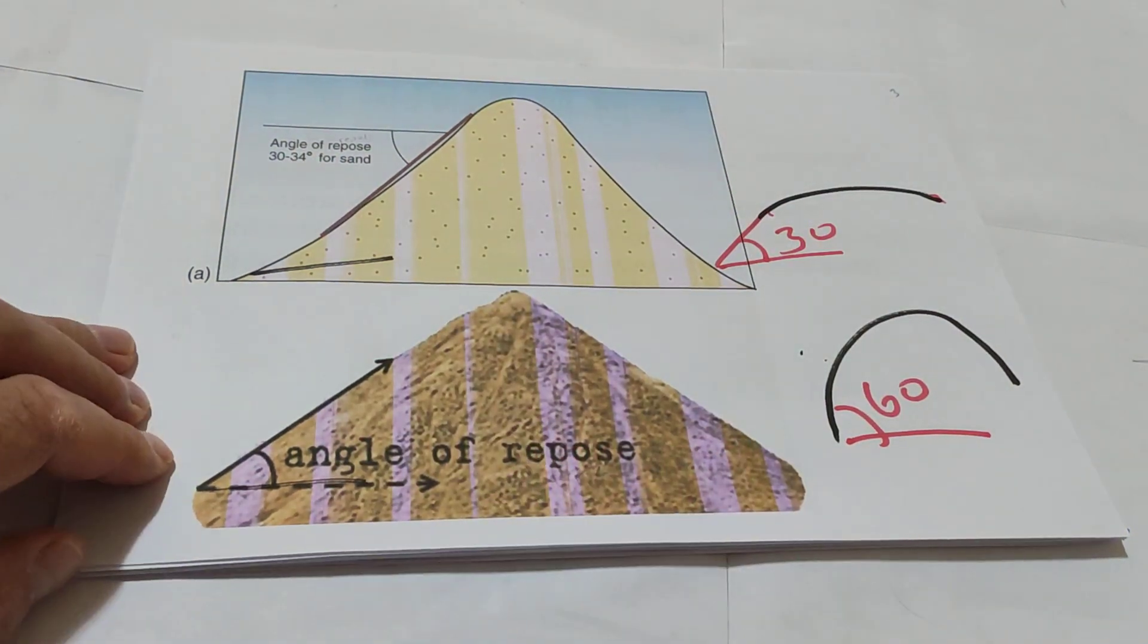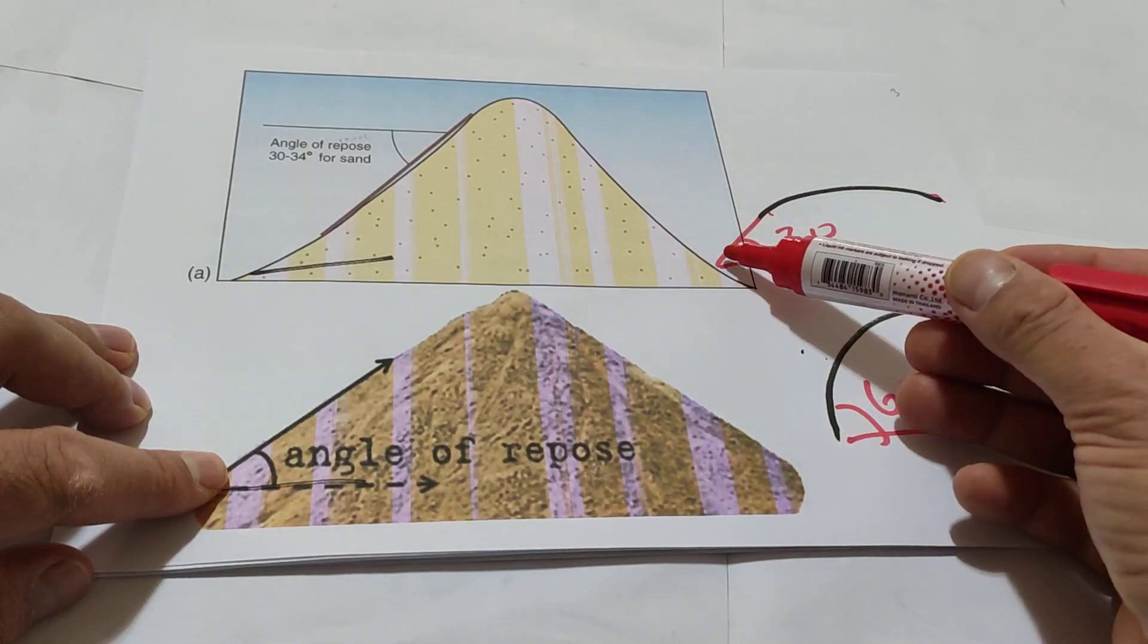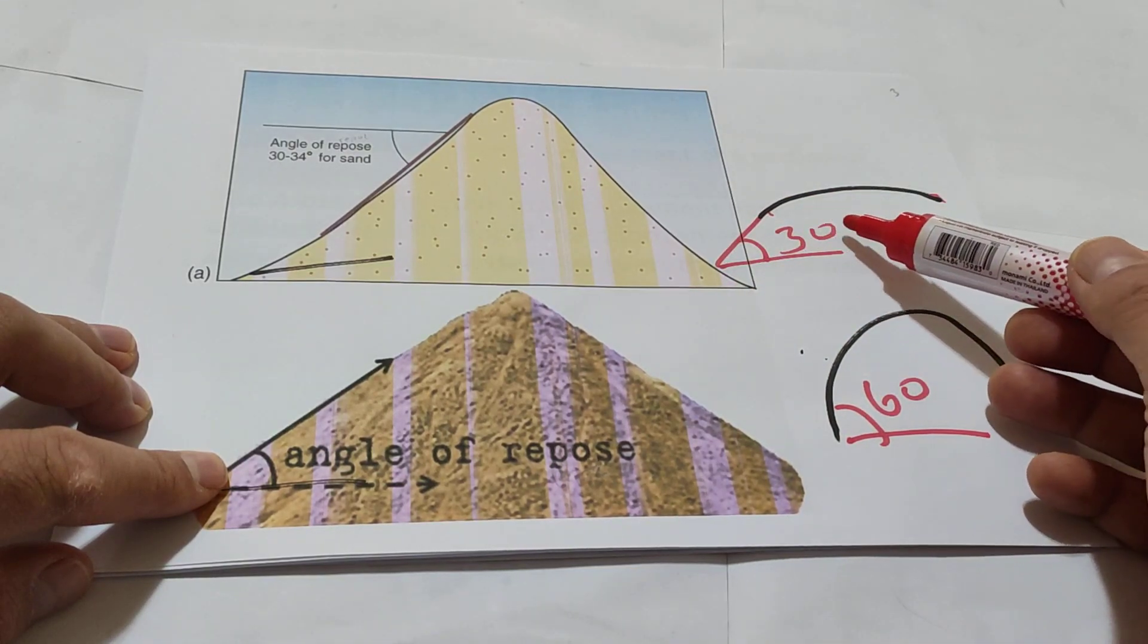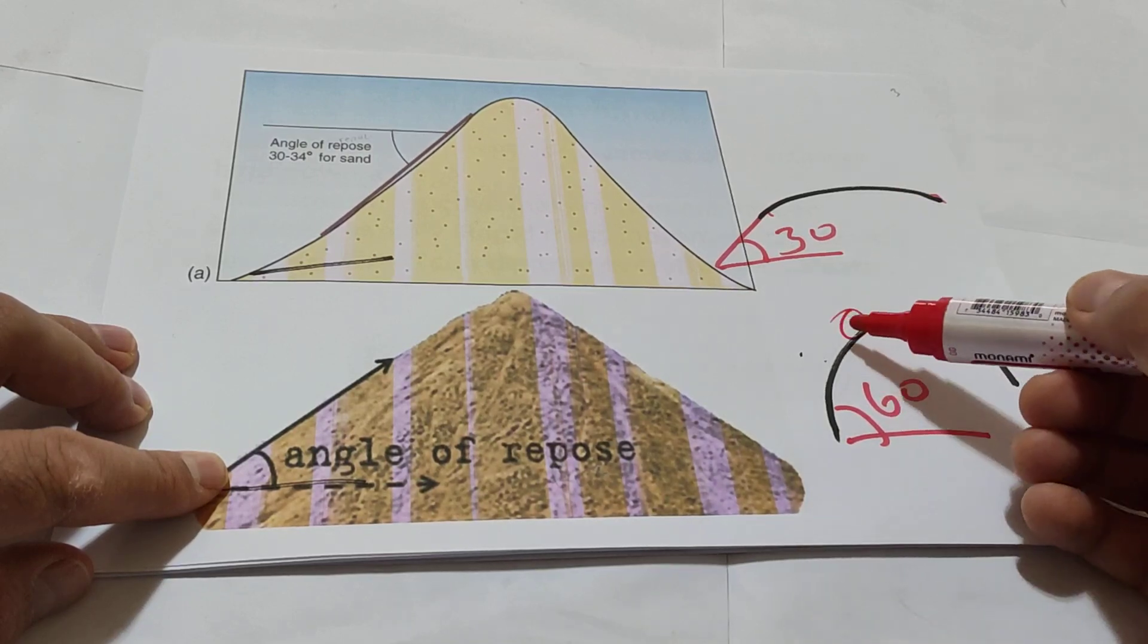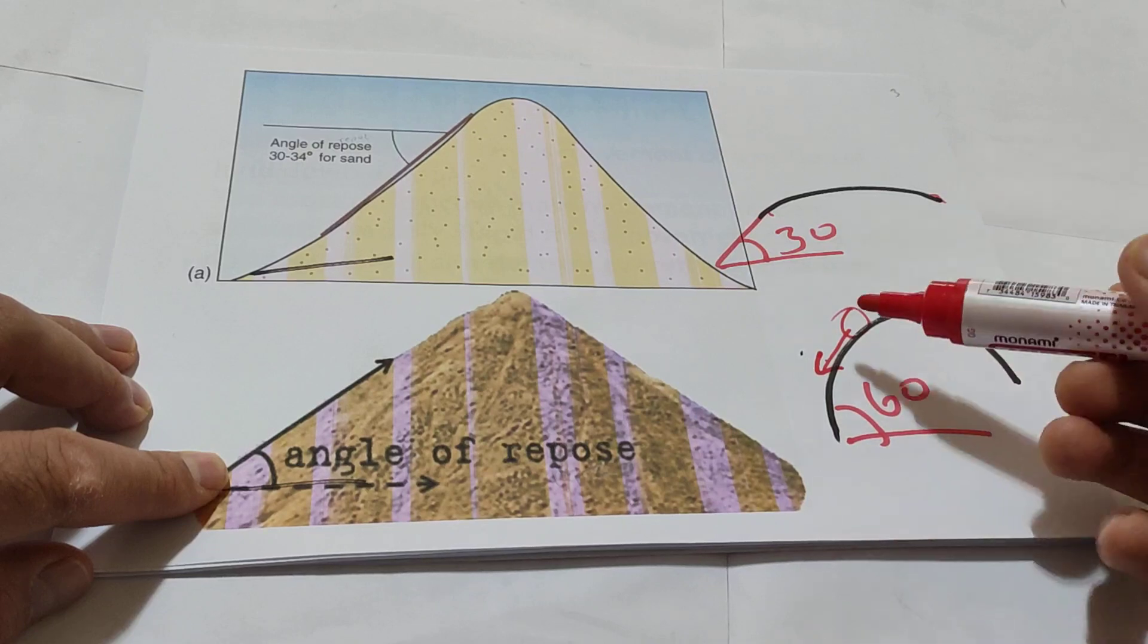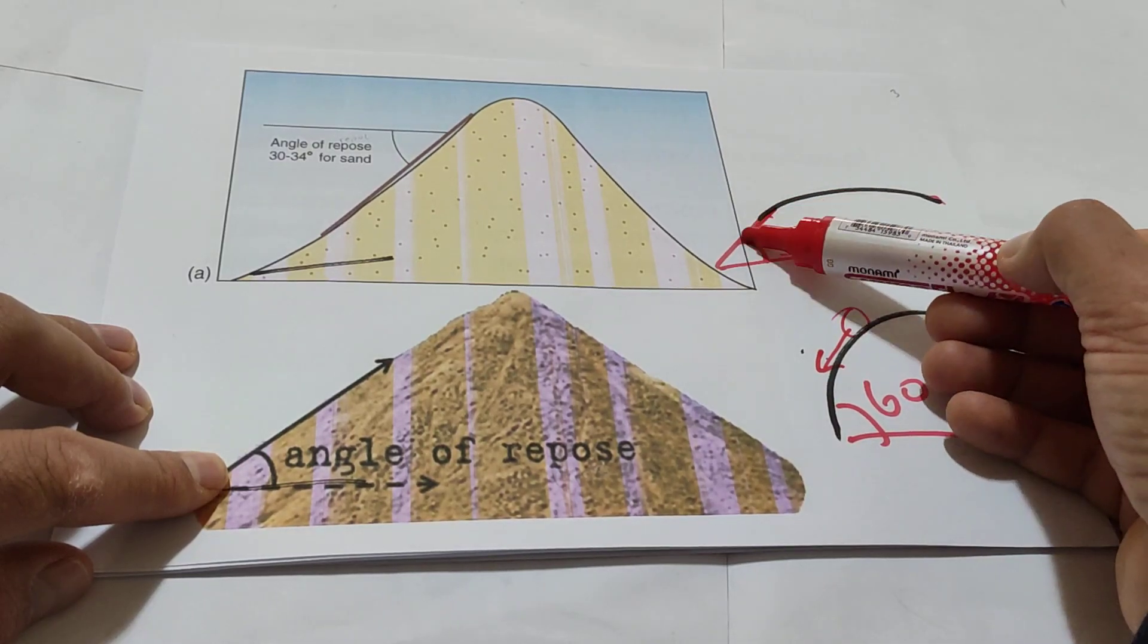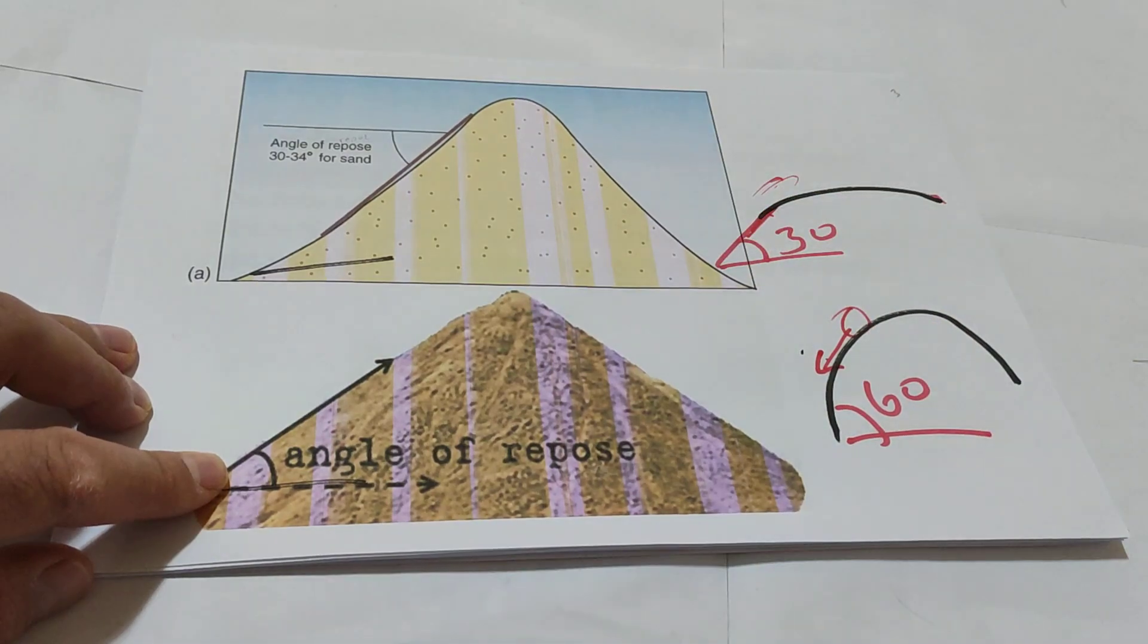The angle of repose is very important. For example, we have two hills. One of them angle of repose 30, the other one 60. The material from here moves very fast. What about here? The movement in that place moves very slow.